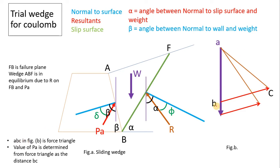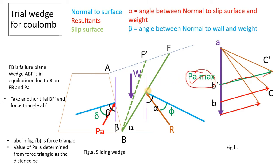ABC is a force triangle. Now value of PA is determined from the force triangle as distance BC. Take another trial BF'. Now when BF' is drawn, P'C' is the maximum. Suppose out of many trials, this is the maximum PA, then it will be our maximum PA and the corresponding failure surface will be our failure surface.